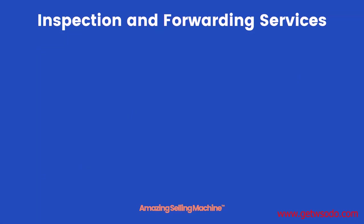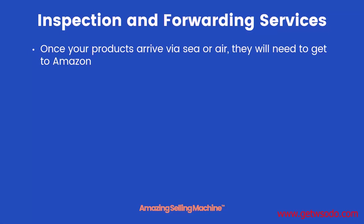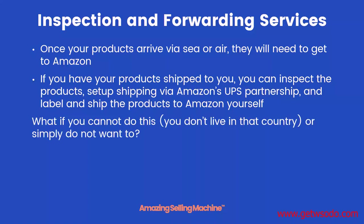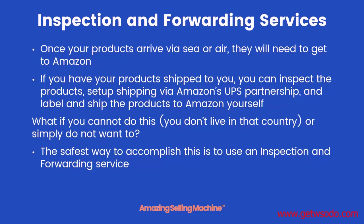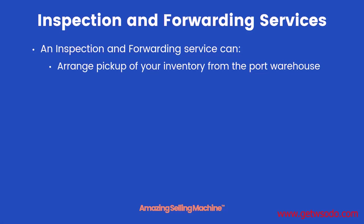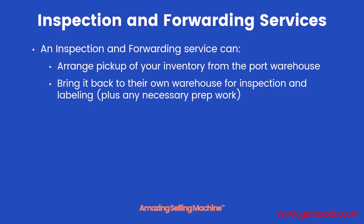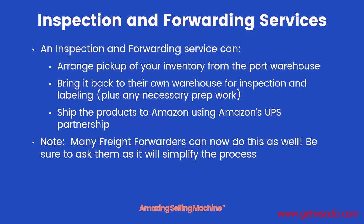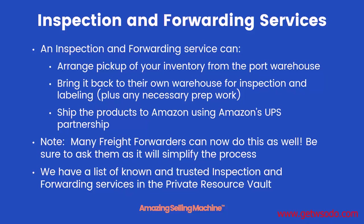Once your products arrive via sea or air, they still need to get to Amazon. If you have products shipped to your home, you can set up shipping inside Seller Central using Amazon's UPS partnership, then label and ship the products yourself — which is perfectly fine for getting started. But if you can't or don't want to do that, the safest option is an inspection and forwarding service. They can arrange pickup from the port warehouse, bring it to their warehouse for inspection, labeling, and prep work, and then ship directly to Amazon using Amazon's UPS partnership. Many freight forwarders now offer this service as well, so be sure to ask them.